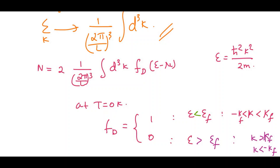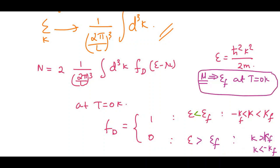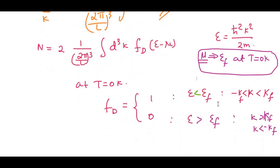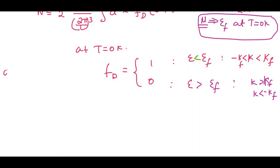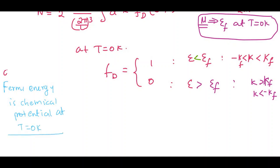Also, mu (chemical potential) is equal to EF (Fermi energy) at T equal to 0 Kelvin. So we can define Fermi energy as the chemical potential at T equal to 0 Kelvin. If somebody asks you to define Fermi energy, you can say: the chemical potential at T equal to 0 Kelvin is called Fermi energy. Now let us continue our derivation.